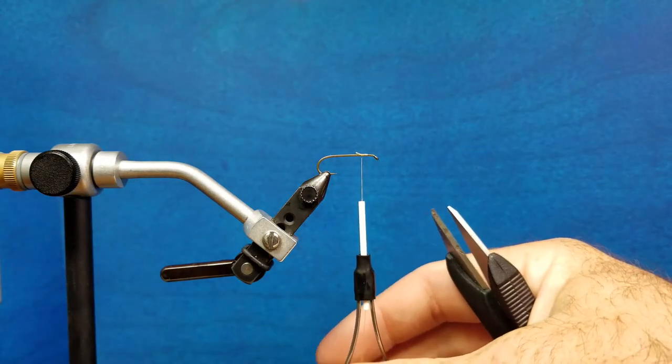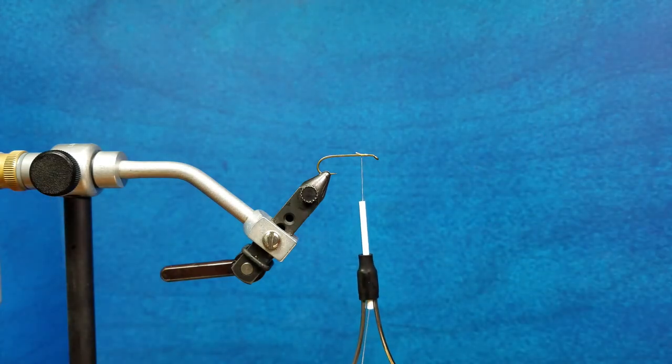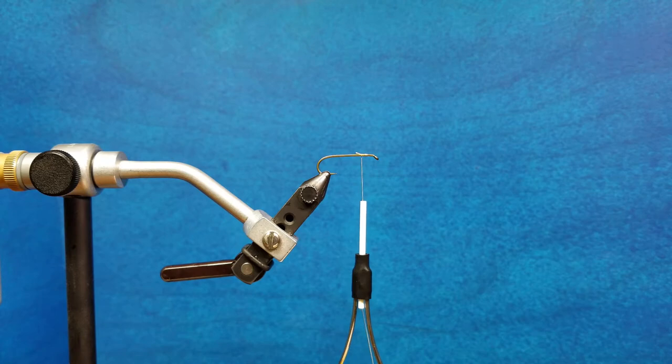One of the simplest knots that you can use to secure your materials as you work or to finish a fly is a half hitch. And the way that I was taught was to think of the game of leapfrog.